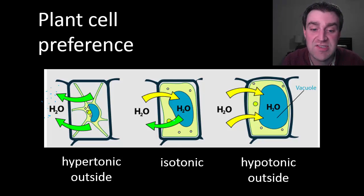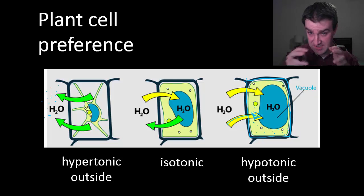But plant cells don't really want it isotonic either. They actually prefer it to be hypotonic outside, so maybe there's more solute in the cells so that water is incentivized to rush in. And why is that helpful for them? Because they have a cell wall that protects them from blowing up. What that water does is it rushes in and pushes against the cell wall and creates a water pressure that actually helps plants stand straight up, especially plants that don't have woody stems.